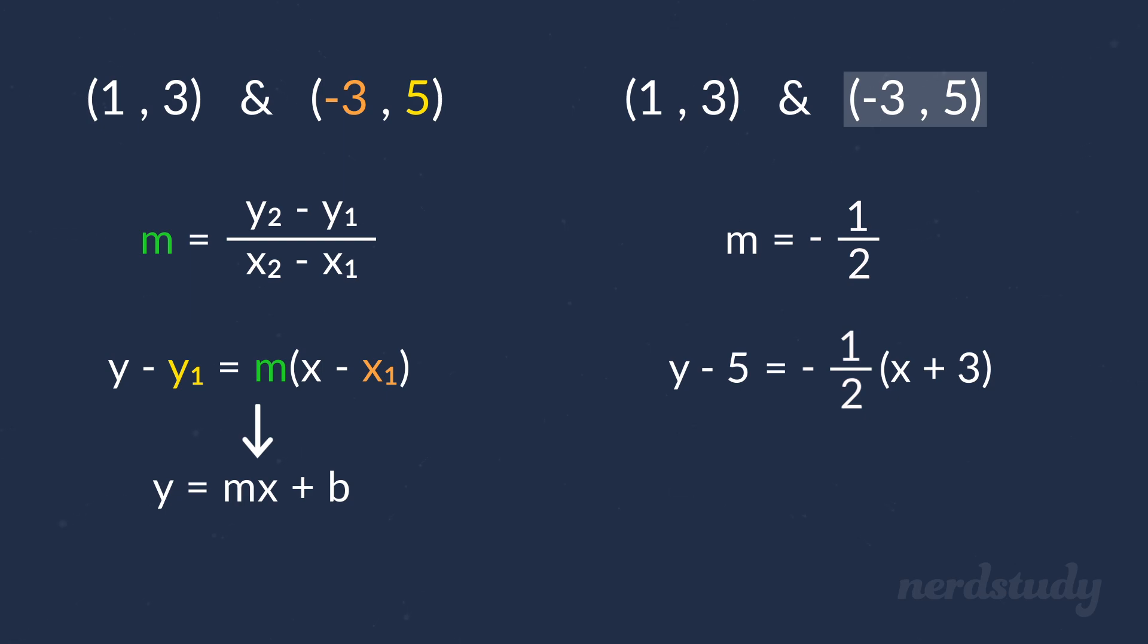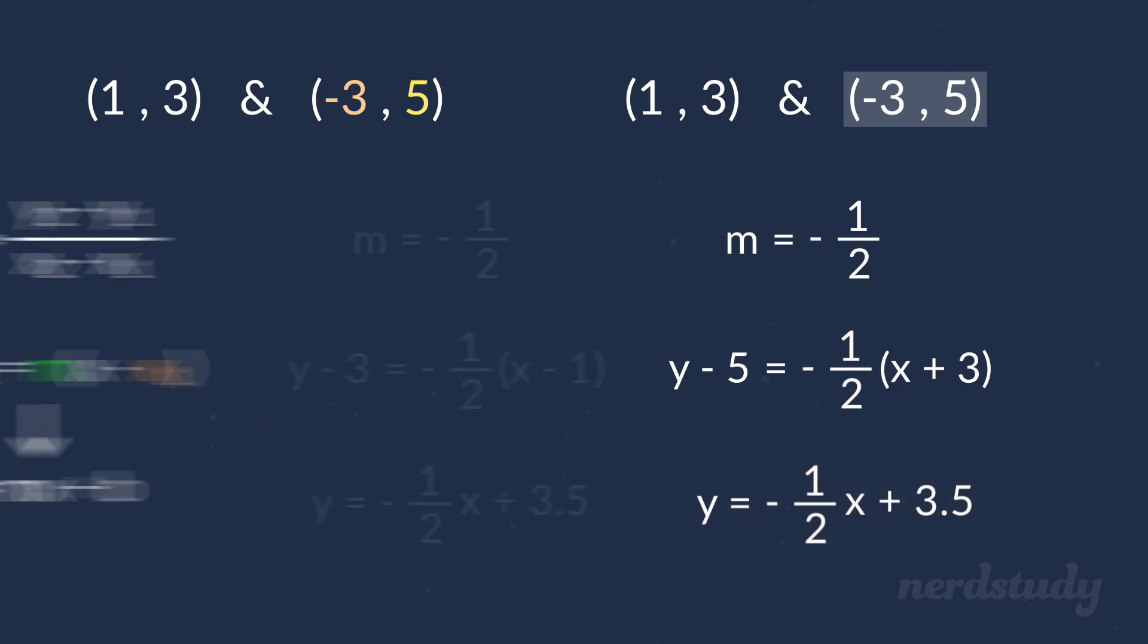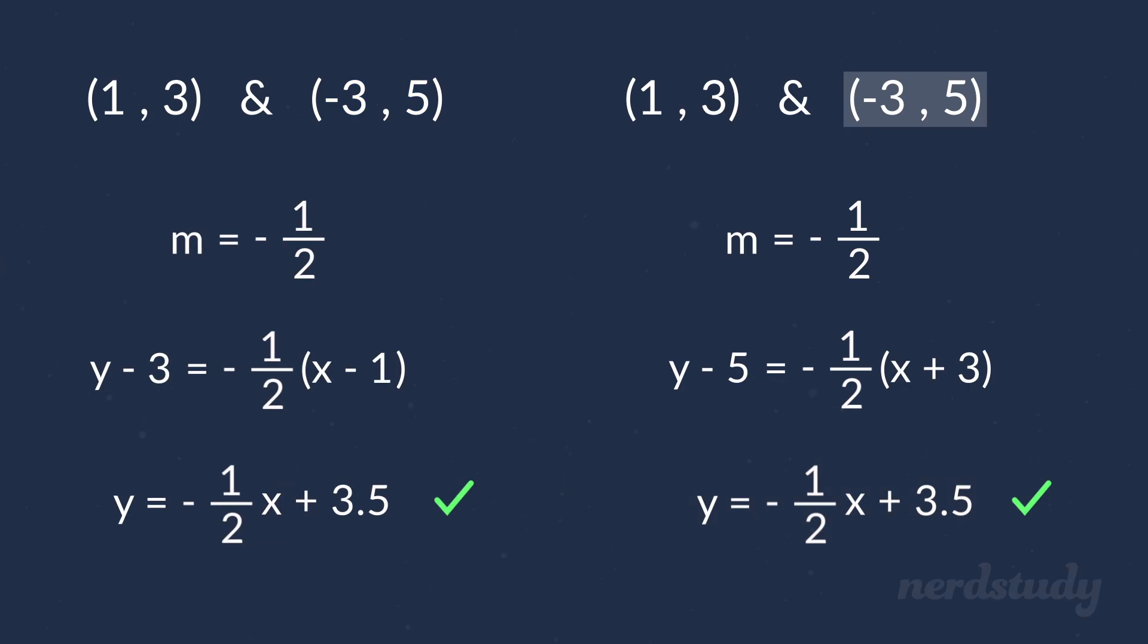So, now to find slope-intercept form again, we distribute this value to each term to get the following. Now, we just need to add 5 to both sides, and what we get is this. As we can see, this is indeed the same answer as our previous one when we used the other point. So, we figured out that we can actually use any of the two points to arrive upon the same answer.